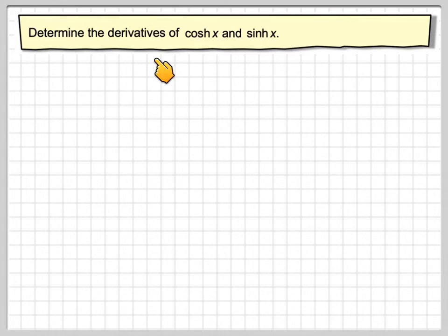In this video, we're going to determine the derivatives of cosh x and sinh x. So d/dx of cosh x is equal to d/dx of its exponential form, which is e to the x plus e to the minus x over 2.